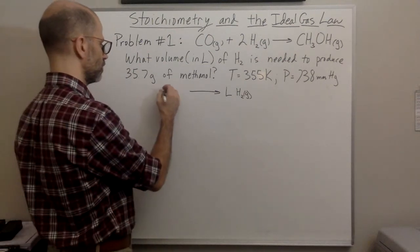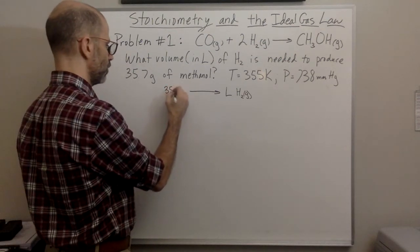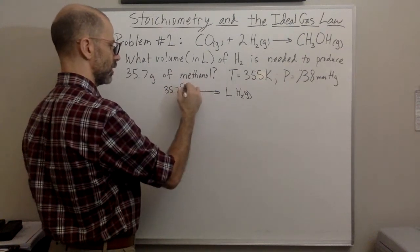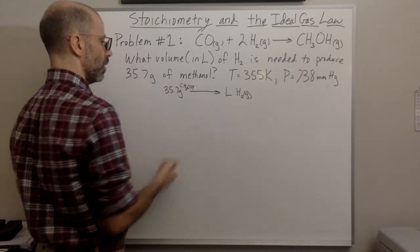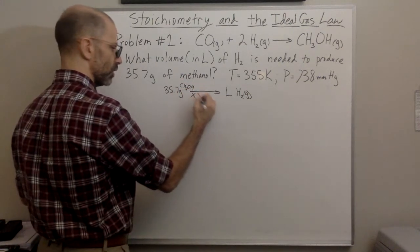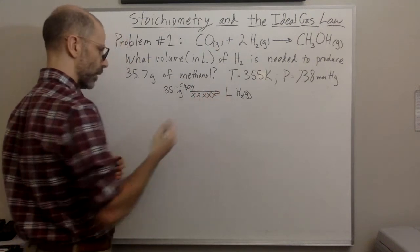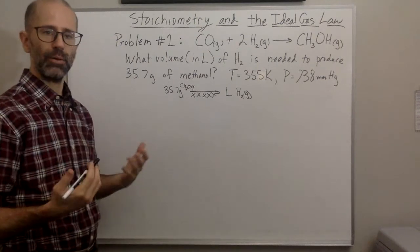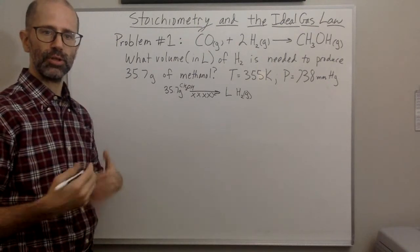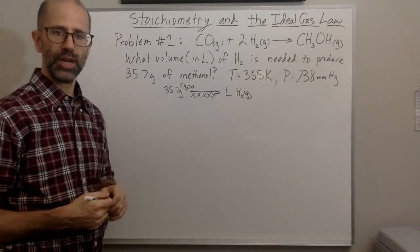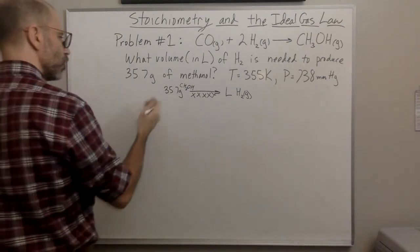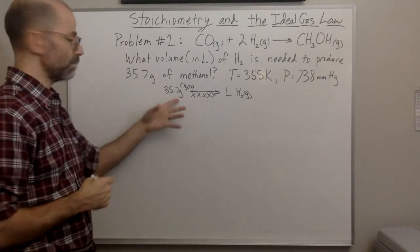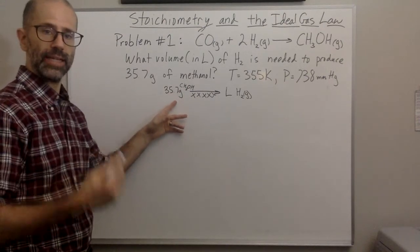So once you know where to begin, we're going to start with 35.7 grams of methanol — CH3OH. Everything in between is going to be some sort of conversion factor or equation. Notice that they give me grams and it's grams of a gas, so I need to get to moles.